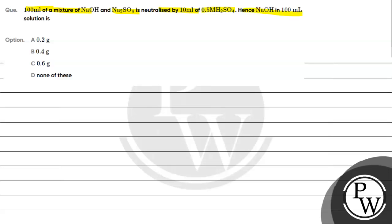Hence, sodium hydroxide in 100 ml solution is: option A, 0.2 gram; option B, 0.4 gram; option C, 0.6 gram; option D, none of these.